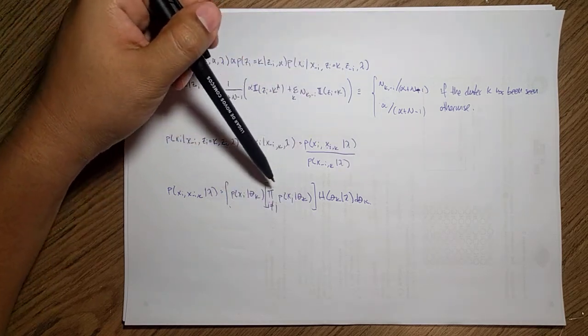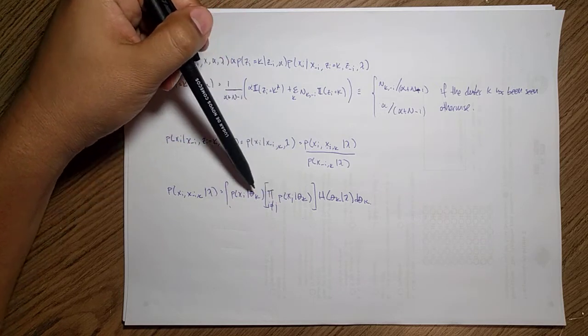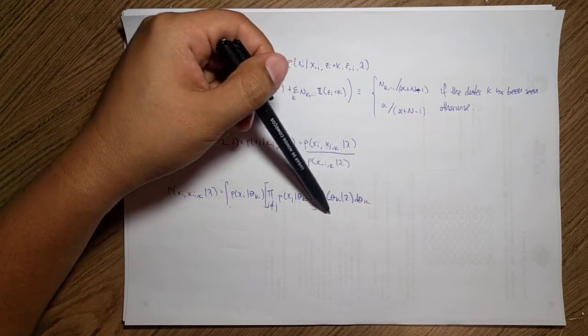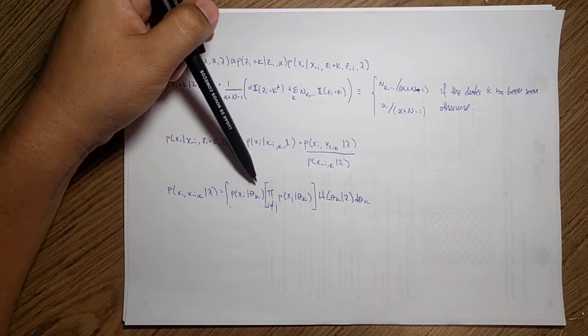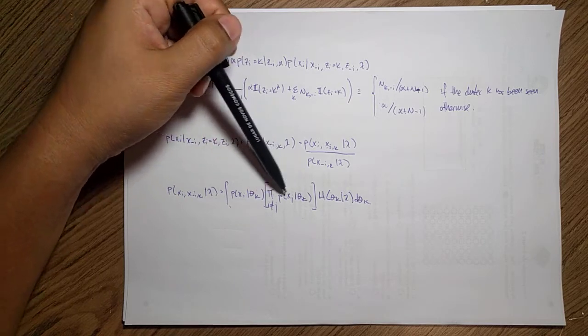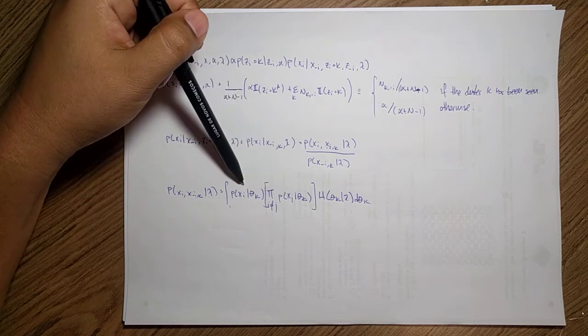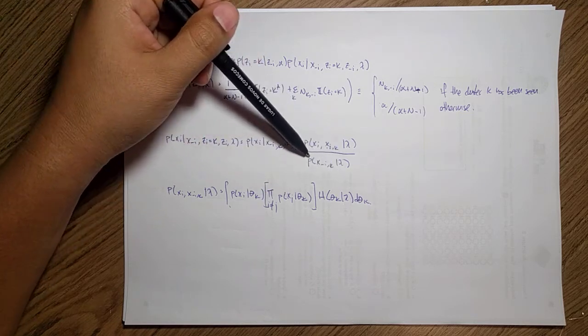What we did here is integrate with respect to all the possible parameters, then do the likelihood of the data, trying to see what is the fit of all the data with respect of this model and seeing how likely that model is with respect of my base measure.